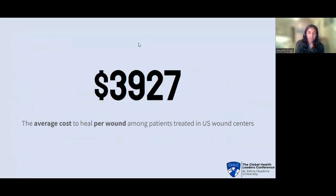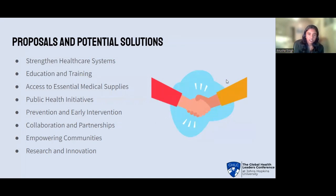All of these causes and statistics can lead to the exacerbation of an acute wound into a chronic wound. The average cost to heal per chronic wound among patients treated in U.S. wound centers is approximately $3,927 per wound. This large cost is one that people in many developing countries cannot afford, yet they are also unable to stop the progression from an acute to a chronic wound due to the lack of resources they face. Proposals and potential solutions include strengthening healthcare systems, increasing access to education and training, increasing access to essential medical supplies in low-income areas, acting on public health initiatives, participating in prevention and early intervention of wounds, engaging in collaboration and partnerships, empowering communities, and participating in research and innovation.